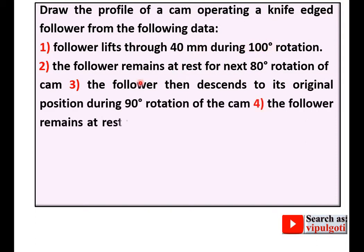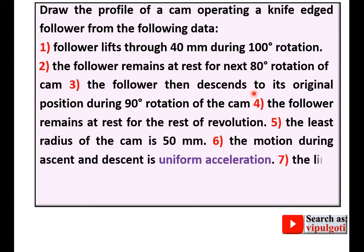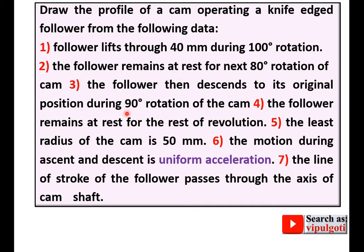Ascent angle 100 degrees. The follower remains at rest, means dwell period. Follower then descends to its original position during 90 degree rotation of the cam. That means descent angle.